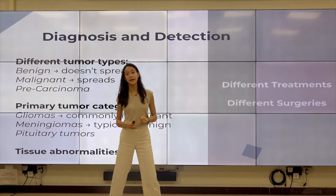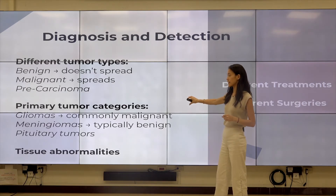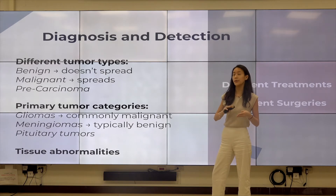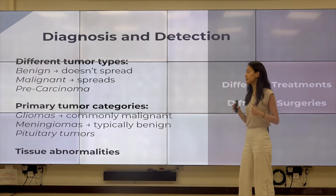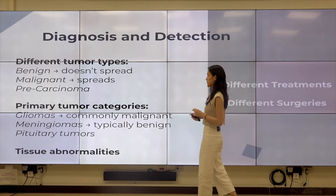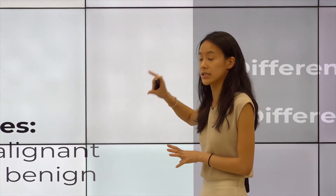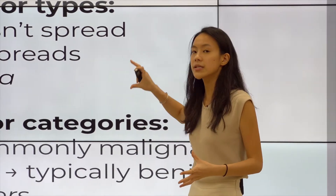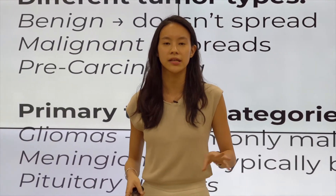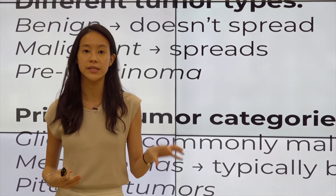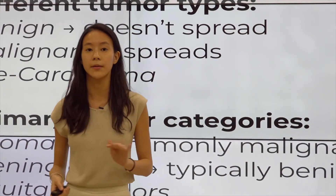There are different kinds of tumor types such as benign, malignant, and precarcinoma. The three primary brain tumor categories are gliomas, meningiomas, and pituitary tumors. Through a doctor's experience, we know for example that gliomas are commonly malignant. Combining this knowledge with classification of MRI images using algorithms, we can assist doctors in deciding what treatments or surgeries are required. This speeds up and makes the entire workflow more efficient for physicians.